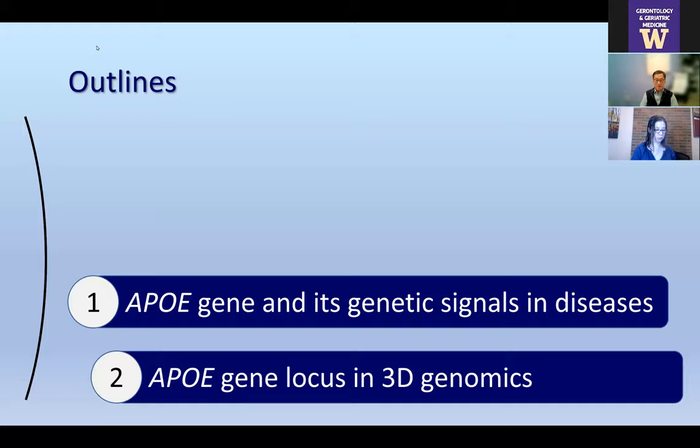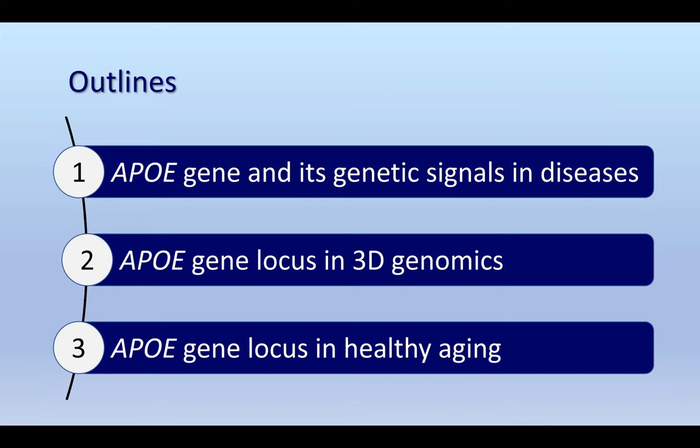I have divided my talk into three sections. First, the APOE gene and its genetic signals in disease — a background and mini review of what we currently know. In the second section, I will introduce the concept of 3D genomics and why we think the APOE locus fits into this mechanism. The third part is what we think the APOE locus is involved in with aging.